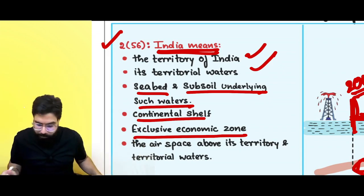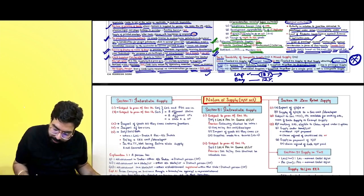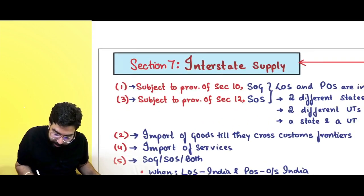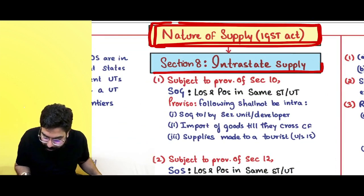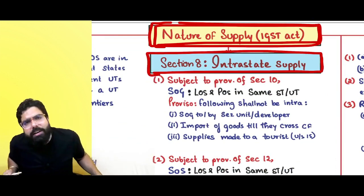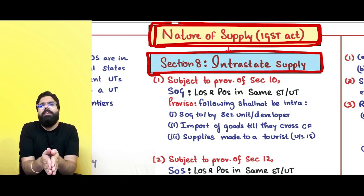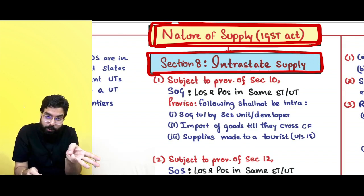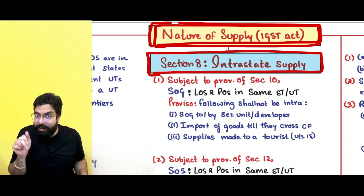Now, nature of supply: supply can be intrastate or interstate. Interstate supply is covered under section 7, and intrastate supply under section 8. Intrastate means whenever the location of supplier and place of supply are within the same state or same union territory — that is always intrastate supply. Interstate means different state or different UT — one state, one UT — that is always interstate supply.